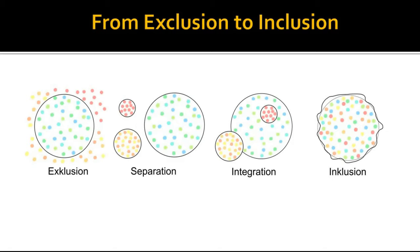In segregation, learners with special educational needs were placed in segregated educational settings. For example, special schools were made for visually impaired learners and separate schools were made for students with intellectual disabilities.